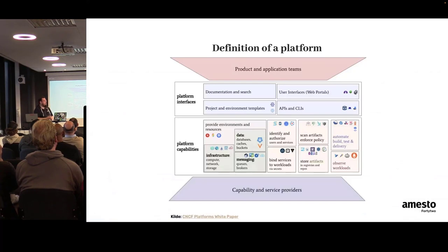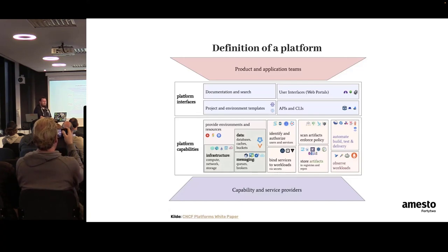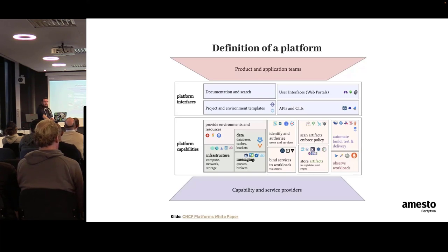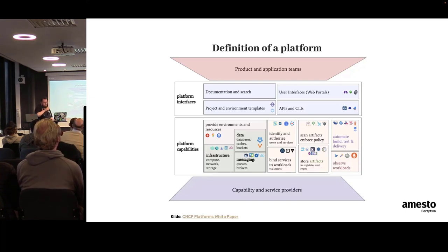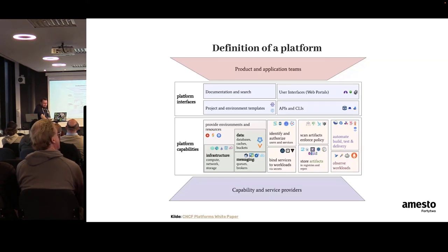In the CNCF Platforms Working Group, we created a white paper — the so-called Platforms White Paper. Everyone we asked had a different definition of what a platform is, so we start off by defining it. On top we have the product and application teams — the people who make the thing that makes money. The entrance to the platform is the platform interface, which can be a lot of things: just documentation, some sort of template code, a Terraform module, or what I prefer — a full-fledged API where people can call and say 'I need a new environment,' potentially with a CLI tool, or even a web portal.